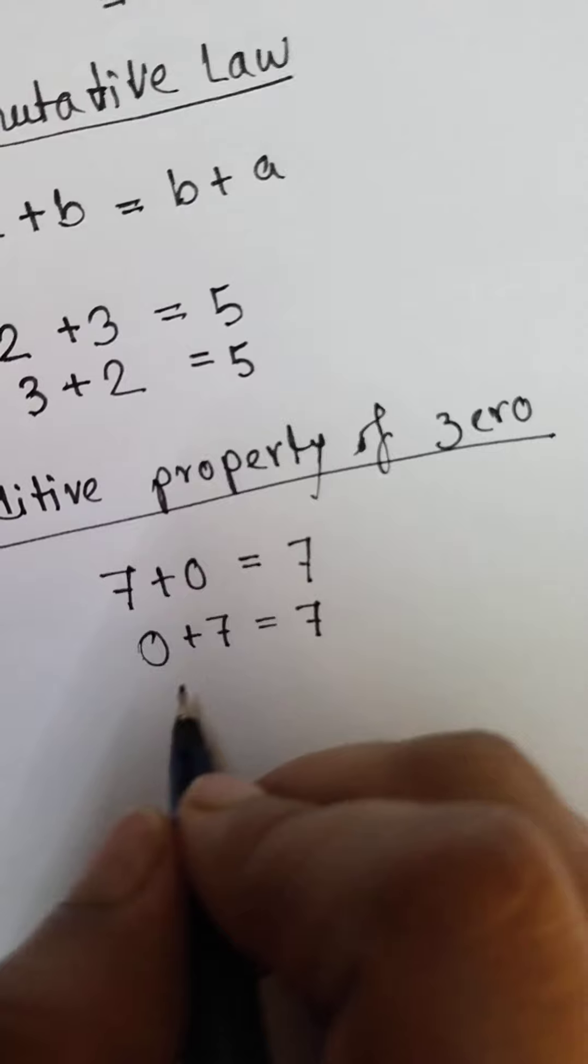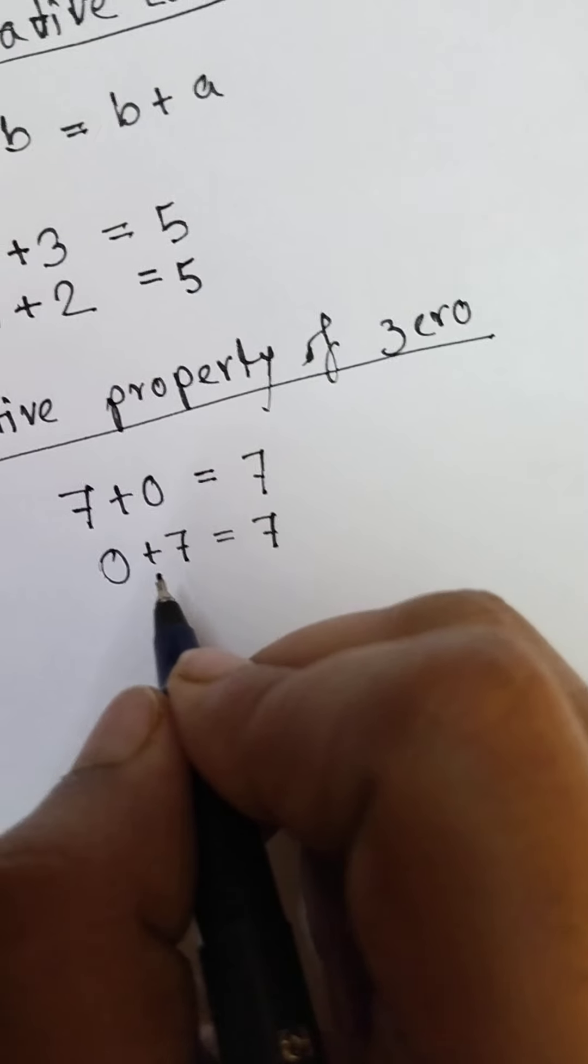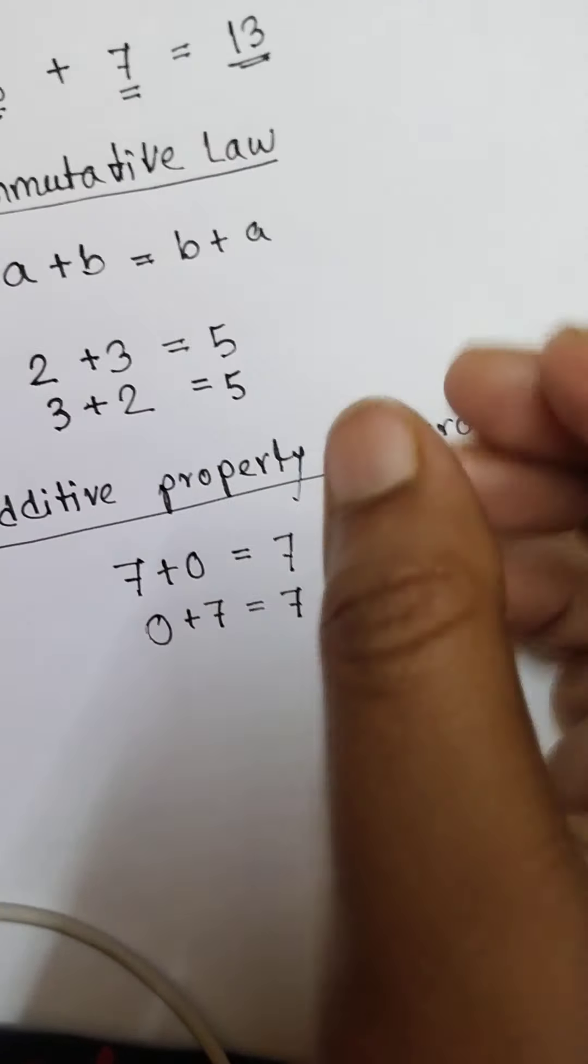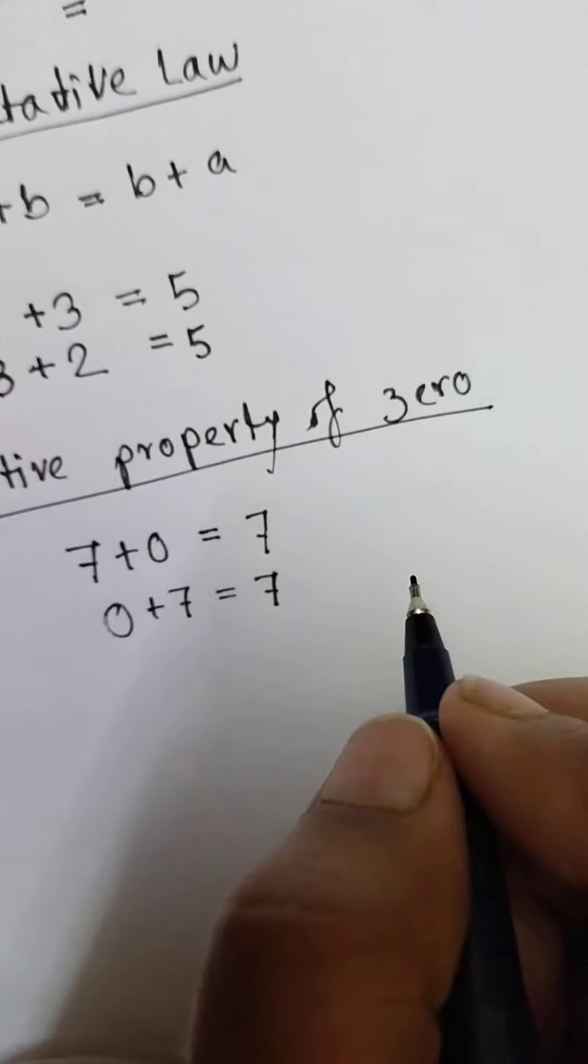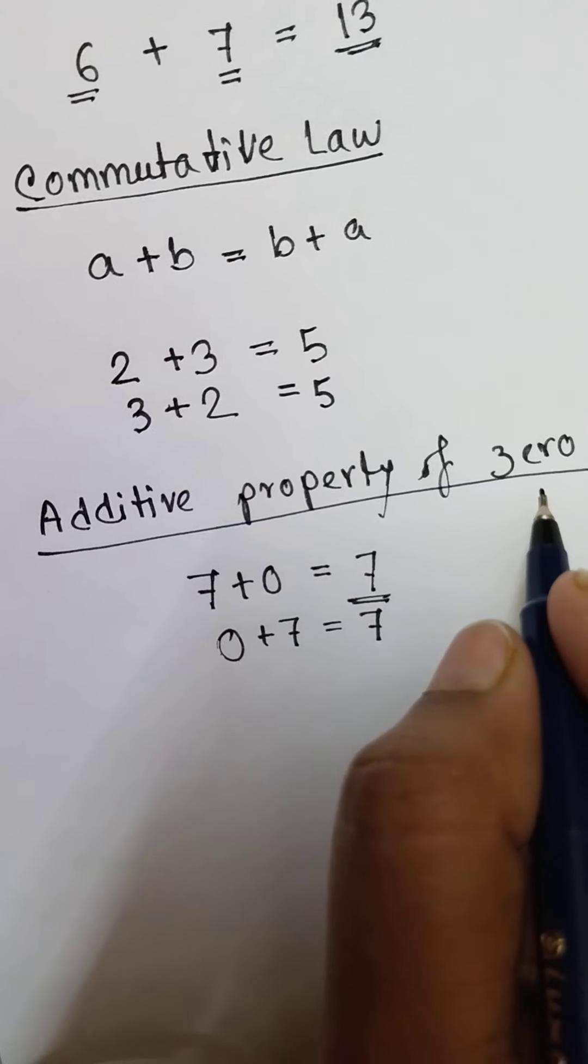So addition of zero will not add anything with that whole number. Addition of zero results in that whole number only. This is the additive property of zero.